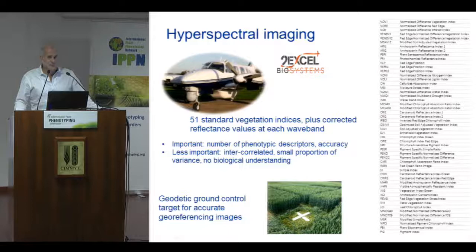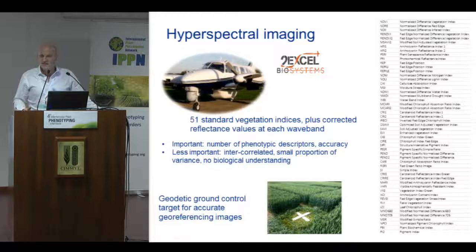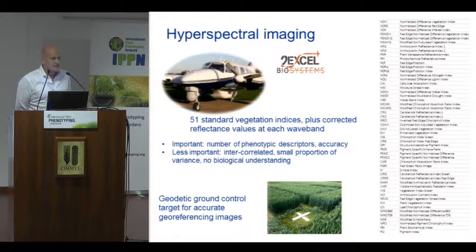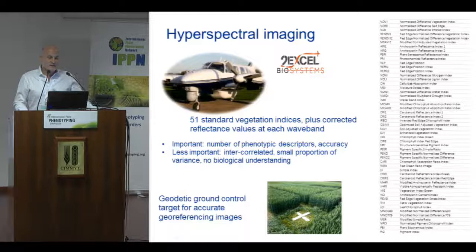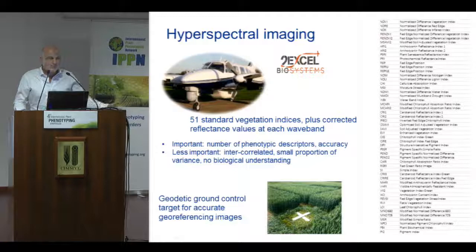According to John's simulation models, if we had 1,000 phenotypic descriptors, that would work really well. With hyperspectral imaging we can get at least 120 data points. Importantly, it doesn't matter that many of those points are intercorrelated, nor that each one explains only a small proportion of the variance in yield — that's also true for single genetic markers. And we don't really need to understand the biological meaning behind each physiological descriptor, although that would be nice.